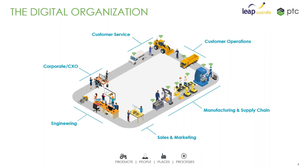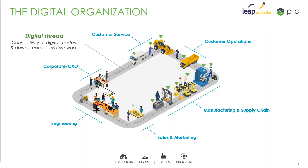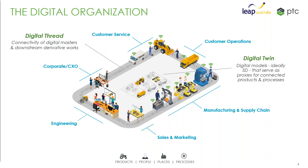The flow of the digital thread can be both downstream and upstream. As shown here, the digital thread can also be used as a basis to create a digital twin, based on the information within the system. Typically with a digital thread, the backbone is often a PLM system. In our case we have Windchill as our PLM system, and that's what we're going to demonstrate today.